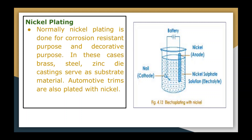Nickel plating is done for corrosion resistance and decorative purposes. In this case, brass, steel, and zinc die castings serve as the substrate metal. Automotive trims are also plated with nickel. The process of nickel plating is shown in this diagram — the nail acts as the cathode, nickel sulfate solution acts as the electrolyte, and nickel is the anode.